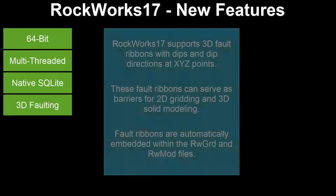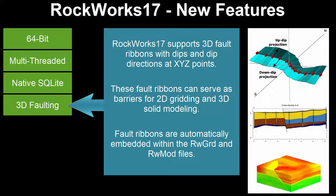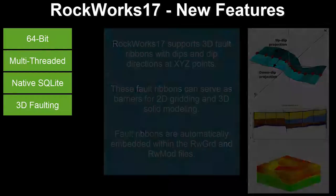RockWorks 17 supports 3D fault ribbons with dips and dip directions at XYZ points. These fault ribbons can serve as barriers for 2D gridding and 3D solid modeling, and fault ribbons are automatically embedded within the RWGRD and RWMod files.